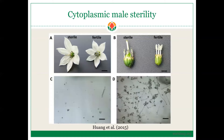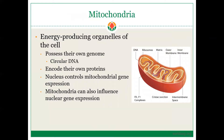Here you can see briefly the sterile flower and the fertile flower with petals removed. You can easily see that the anthers of the sterile flower are shriveled and don't really produce pollen, while the fertile flower has copious amounts of pollen on the anthers. When we look at these pollen grains under the microscope, the sterile flower produces no functional pollen, while the fertile flower shows a large number of germinated pollen tubes, confirming fertility.